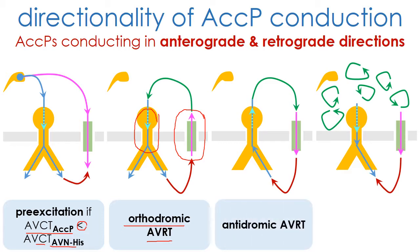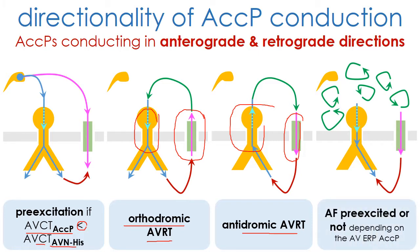Very rarely, they can present the antidromic maximally pre-excited form of atrioventricular re-entry tachycardia, in which the accessory pathway is used as the anterograde arm of the re-entry circuit and the normal AV node, His pathway for ventricular-atrial conduction. Finally, these patients may present atrial fibrillation, and if the anterograde effective refractory period of the accessory pathway is short, then they may exhibit very fast life-threatening ventricular rates during atrial fibrillation due to preferential atrioventricular conduction over the accessory pathway.